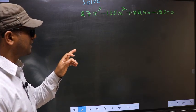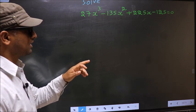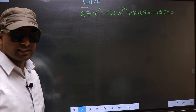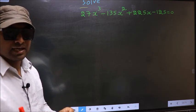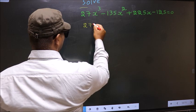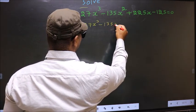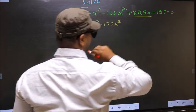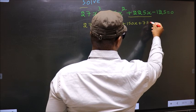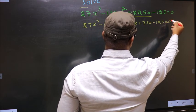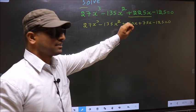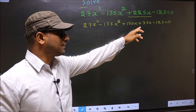Solve 27x³ minus 135x² plus 225x minus 125 equal to 0. We need to find the values of x. To do that, we have to change the x term. So: 27x³ minus 135x² — in place of plus 225x, I write plus 150x plus 75x minus 125 equal to 0. In place of plus 225x, I have written plus 150x plus 75x.